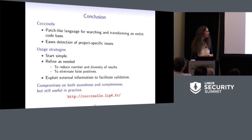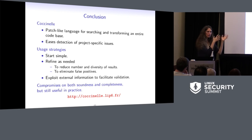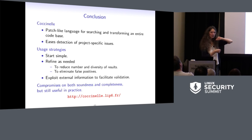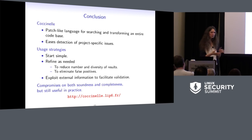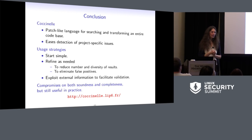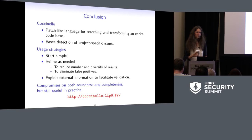In conclusion: Coccinelle provides a patch-like language for searching and performing transformations in an entire codebase. It eases detection of project-specific issues — you know your code, you know what functions are relevant, so you can easily write targeted rules. Usage strategies: start simple and refine as needed, and think about whether Coccinelle could collect additional information to help decide whether a change is correct. We compromise on both soundness and completeness, but it still seems to be useful in practice.